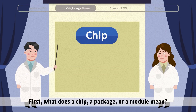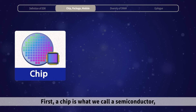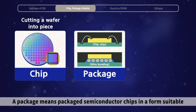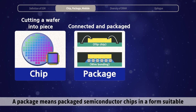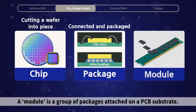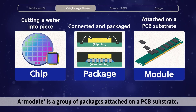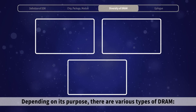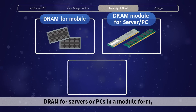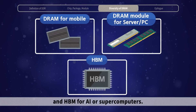Let's move on to the types of DRAM. A chip is what we call a semiconductor — a small square piece cut from a wafer. A package means packaged semiconductor chips in a form suitable for the electronic device it is destined for. A module is a group of packages attached on a PCB substrate. Depending on its purpose, there are various types of DRAM: mobile DRAM in a packaged form, DRAM for servers or PCs in a module form, and HBM for AI or supercomputers.